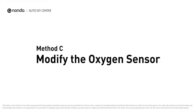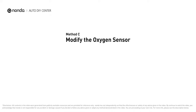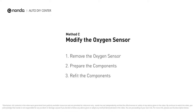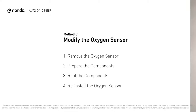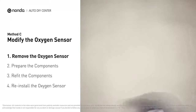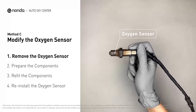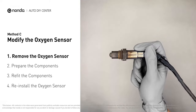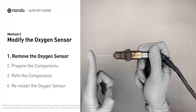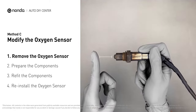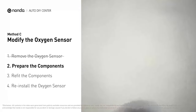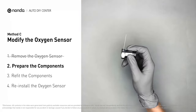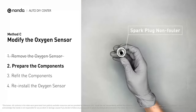Method C: modify the oxygen sensor. You can remove the oxygen sensor from the converter and fix the P0430 by putting some extra space between the sensor and the converter. First, get a spark plug non-fouler.